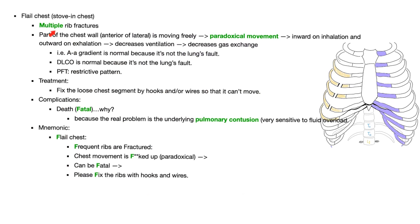So what is flail chest? Multiple rib fractures — as you see here — ribs four, five, and six. Part of the chest wall is moving freely, and it's paradoxical because the whole chest is moving in one manner, but this part is moving in an opposite manner. We call this paradoxical movement.